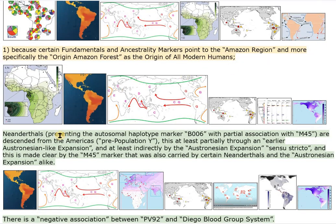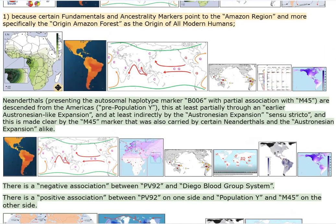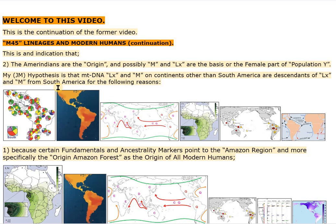Neanderthals, presenting the autosomal haplotype marker B006 with partial association with M45, are descended from the Americas, pre-population Y. This is at least partially through an earlier Austronesian-like expansion, and at least indirectly by the Austronesian expansion sensu stricto. This is made clear by the M45 marker that was also carried by certain Neanderthals and the Austronesian expansion alike.